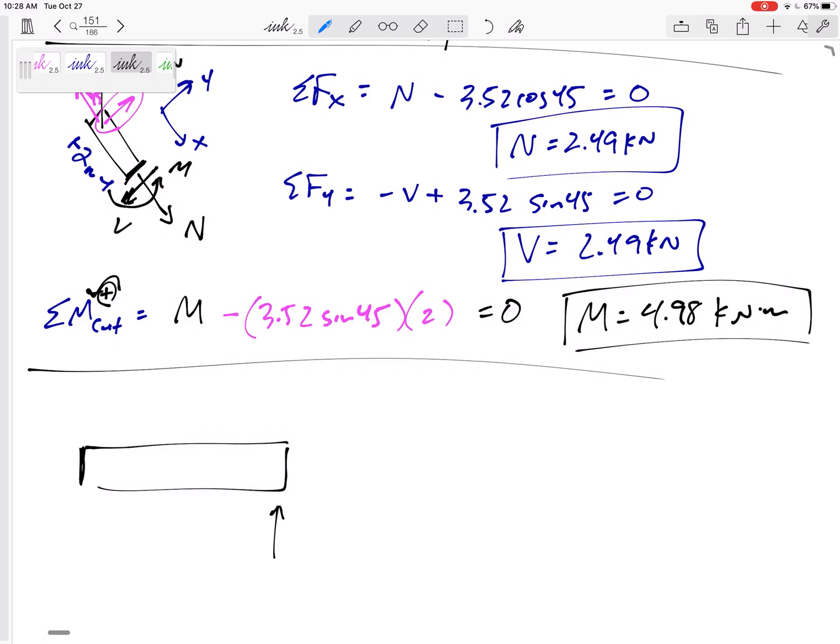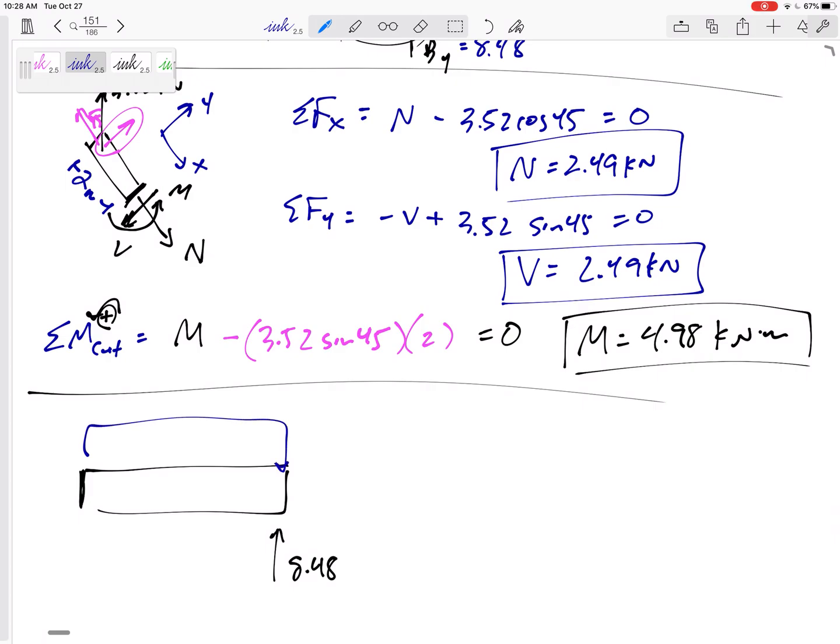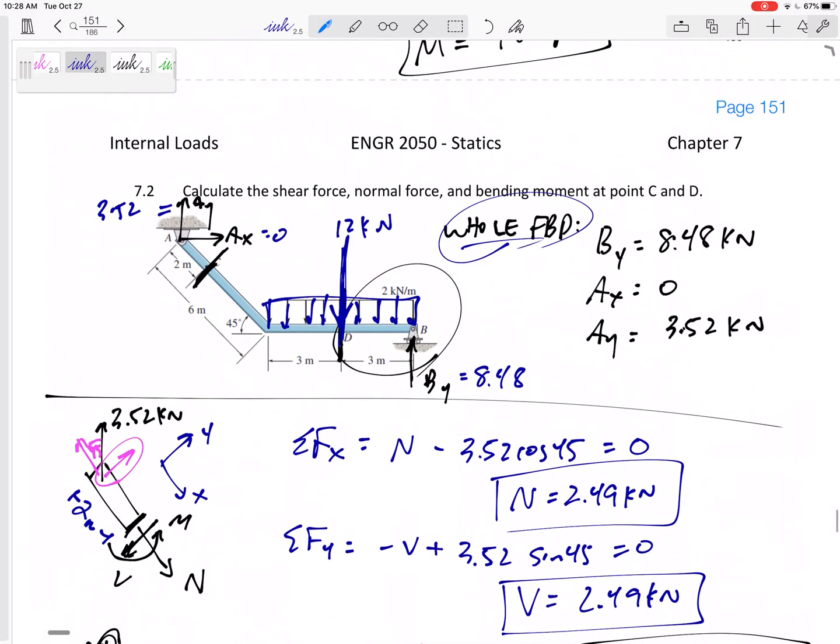And on this right hand side, I had a BY of 8.48. Then I had a distributed load. Now, originally I probably took this distributed load for my whole free body diagram. I took this distributed load and I replaced it with one force right here. What would it be? 12 kilonewtons. And that's fine for the whole free body diagram. But now that I'm cutting it, I need to redo that. I need to redo that.